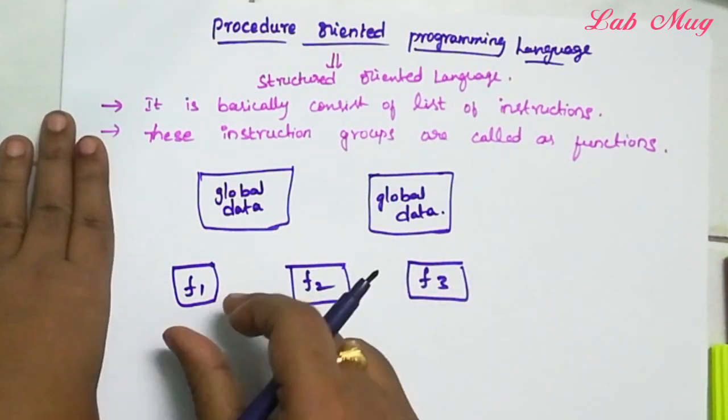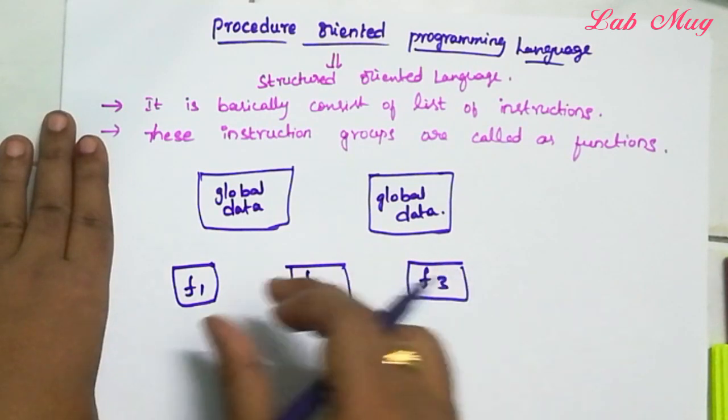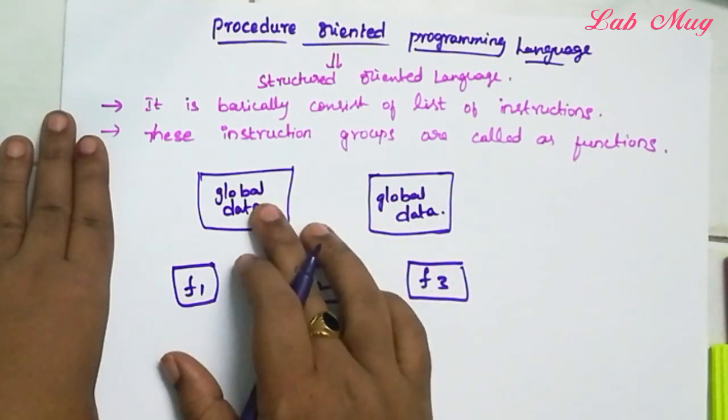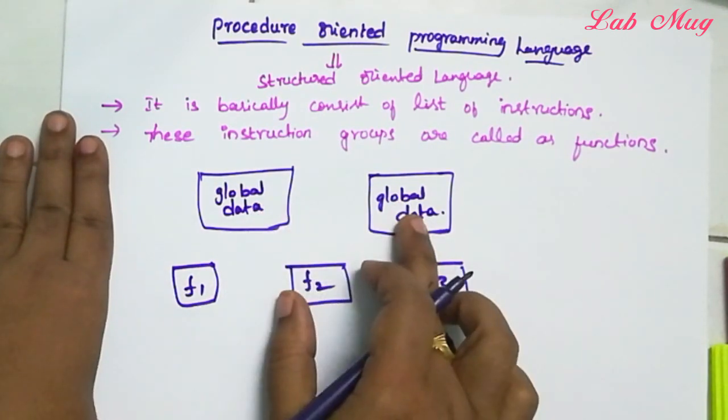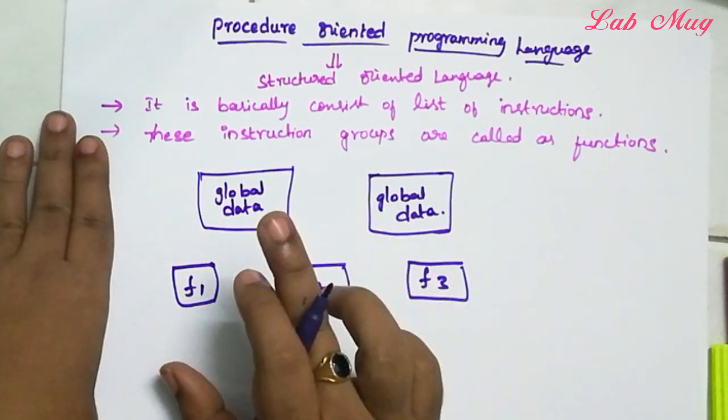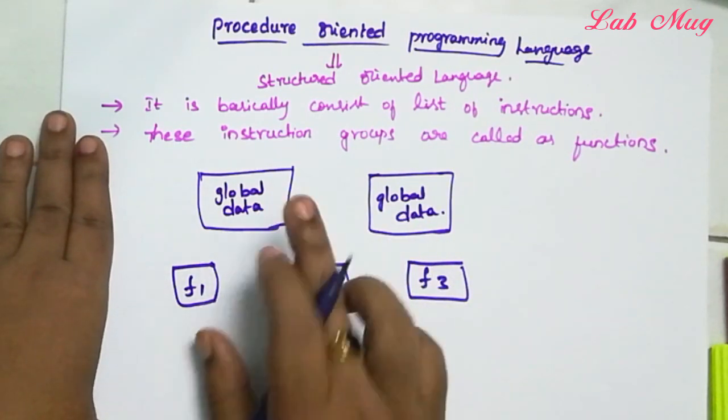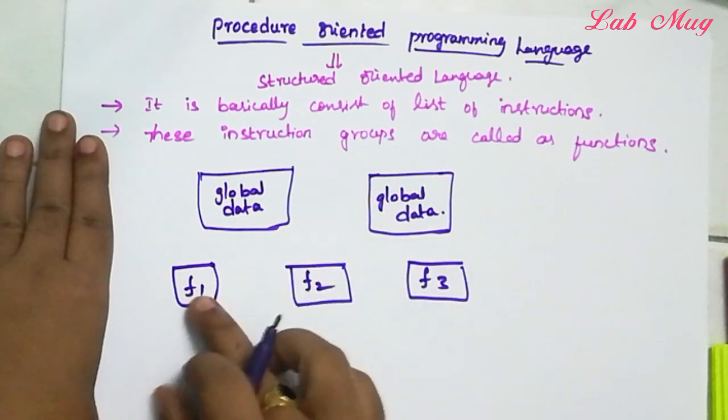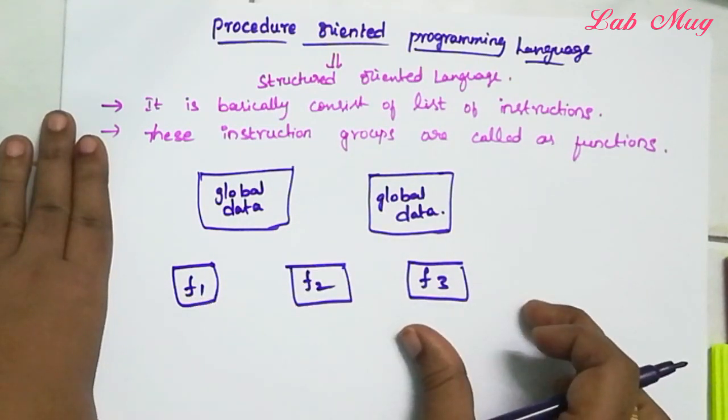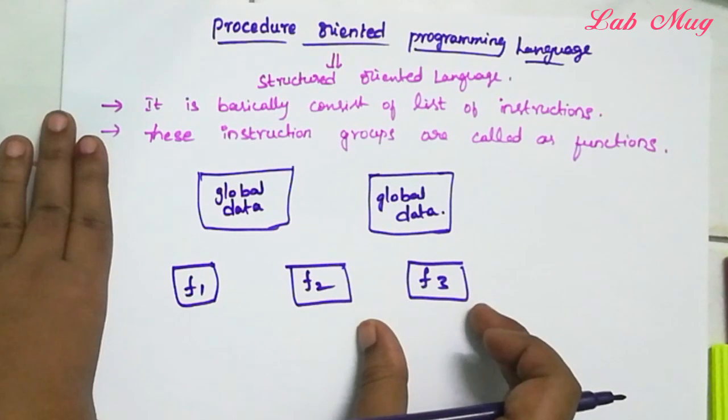F1, F2, F3, that is Function 1, Function 2, Function 3. These three functions access the data globally available. Any of the three functions can access this data, so we call it global data. Every instruction is nothing but one function.